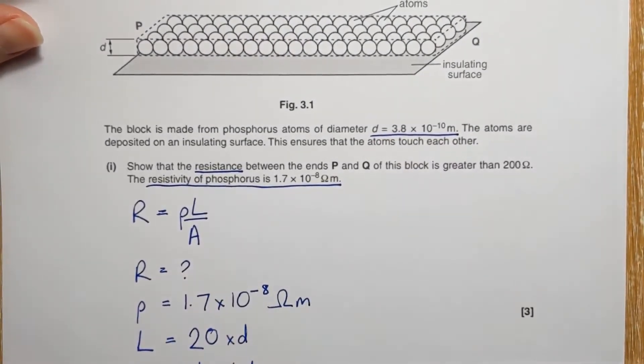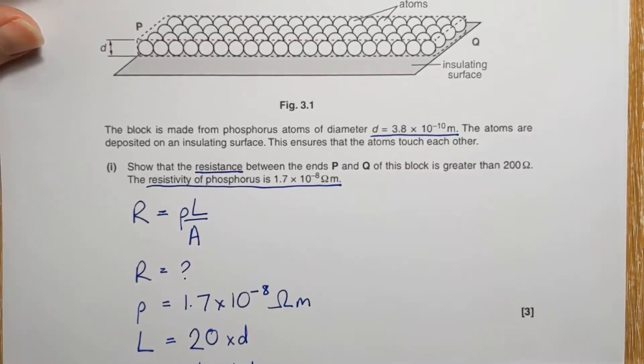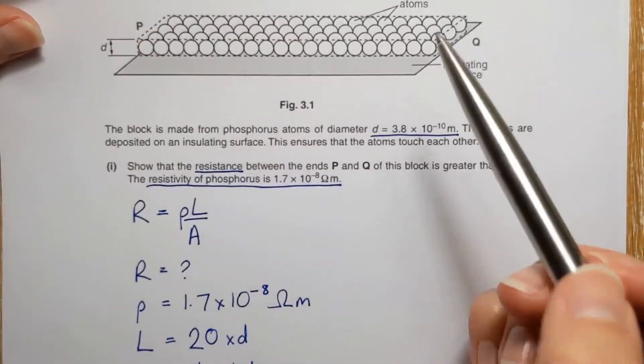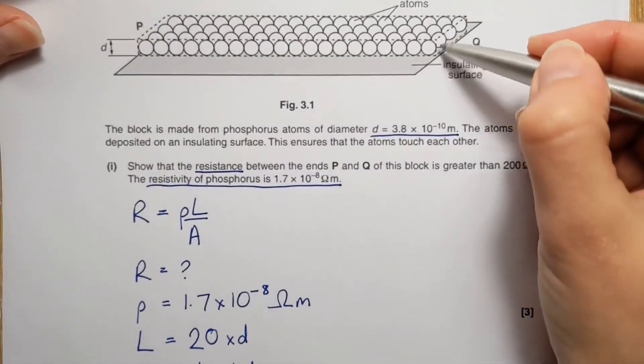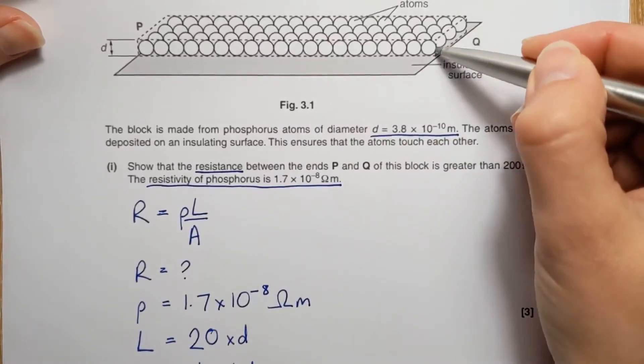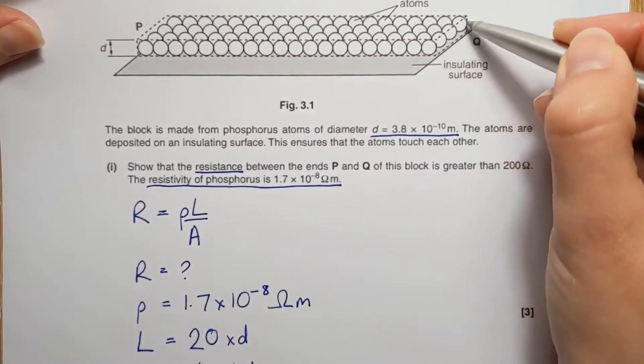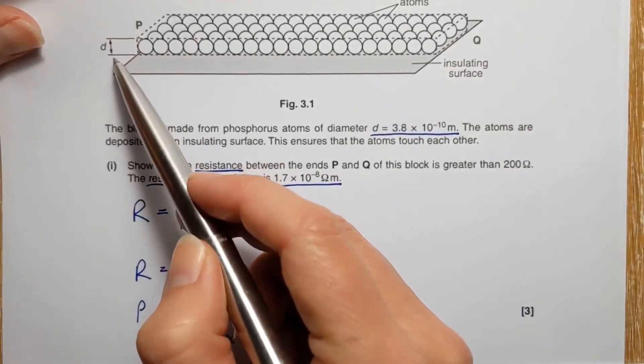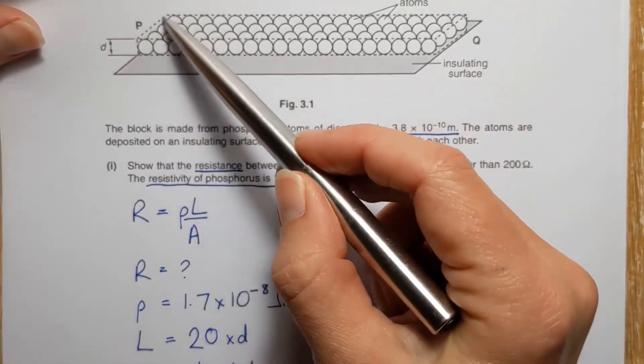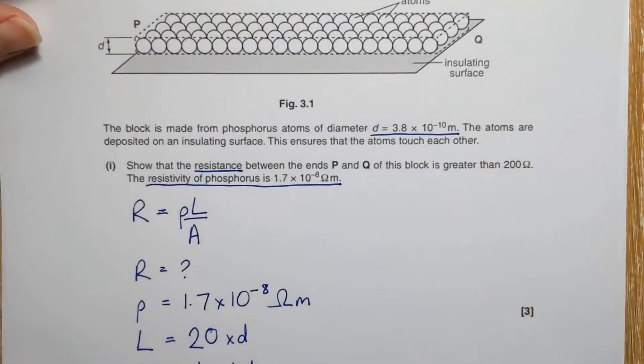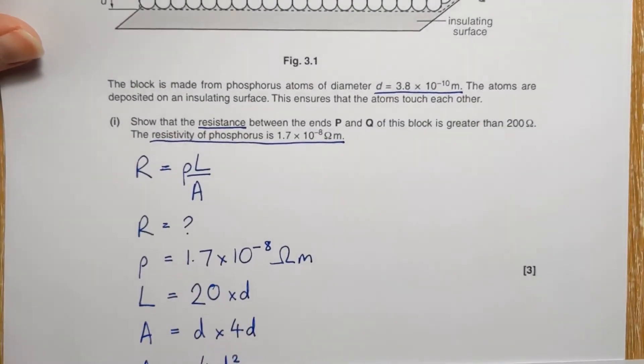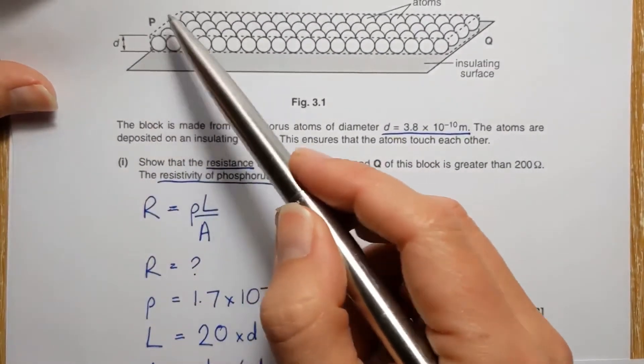And then the cross-sectional area. Now remember, it's not surface area. It's not the surface area of an atom. It's the cross-sectional area of the thing that you're looking at. So we're talking about this sort of rectangular plane here, this little rectangle here. So that is D high, it's a diameter high, and then it's four of them across. So that's 4D across. So that means that our cross-sectional area is D times 4D.